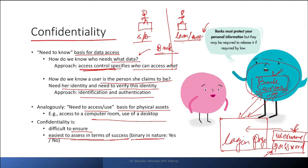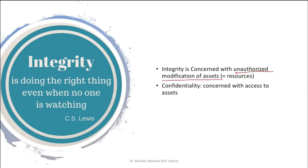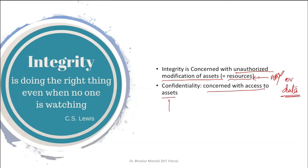Integrity is about controlling unauthorized modification of assets or resources — which can be hardware or data. Data is also a resource. While confidentiality is concerned with access to an asset, integrity is about whether that asset has been altered. For an IT company, data is the biggest and most costly asset.